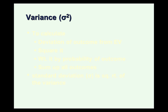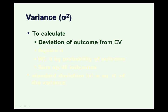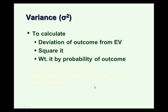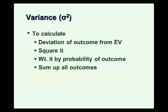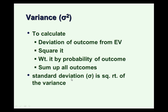Our simplest measure of risk is standard deviation. The first step is to calculate the variance, denoted by lowercase Greek sigma squared. For each outcome, we take its deviation from the expected value, square it — which makes everything positive so we're adding up distances — and weight it by the probability of that outcome, then add it all up. The expected return is where we end up on average, but variance tells us how likely it is that any given outcome differs from that expected return. Standard deviation is the square root of variance, and it's more useful because variance is calculated in units squared — percentage squared, dollar squared — which is hard to interpret. Standard deviation is measured in the same units as the original outcomes.